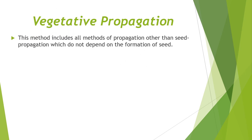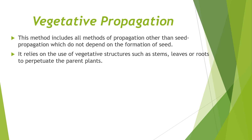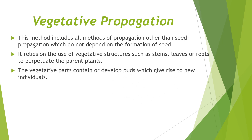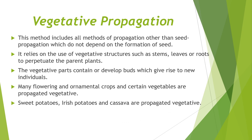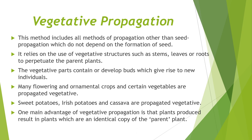Vegetative propagation includes all methods of propagation other than seed propagation, which do not depend on the formation of seed. It relies on the use of vegetative structures such as stems, leaves, or roots to perpetuate the parent plants. The vegetative parts contain or develop buds which give rise to new individuals. Many flowering and ornamental crops and certain vegetables are propagated vegetatively. Sweet potatoes, Irish potatoes, and cassava are propagated vegetatively. One main advantage is that plants produced are an identical copy of the parent plant.